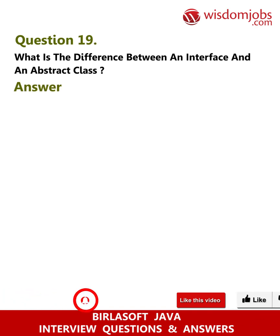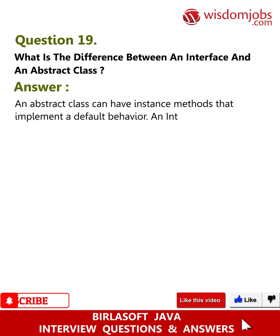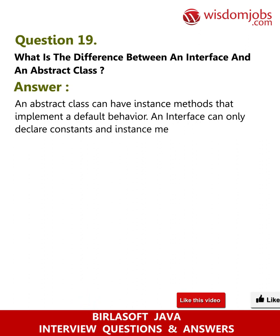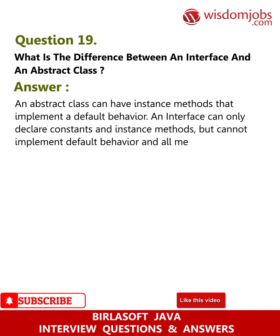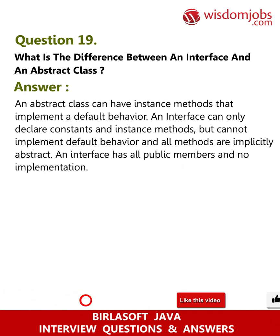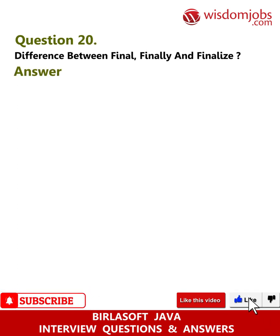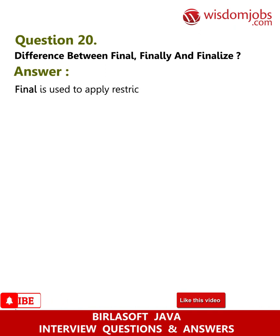Question 19: What is the difference between an interface and an abstract class? Answer: An abstract class can have instance methods that implement a default behavior. An interface can only declare constants and instance methods but cannot implement default behavior, and all methods are implicitly abstract. An interface has all public members and no implementation.